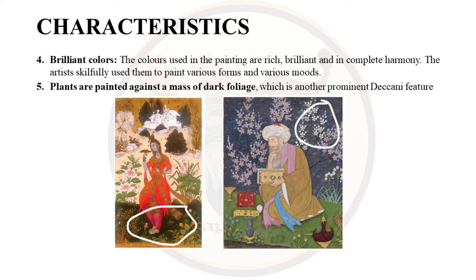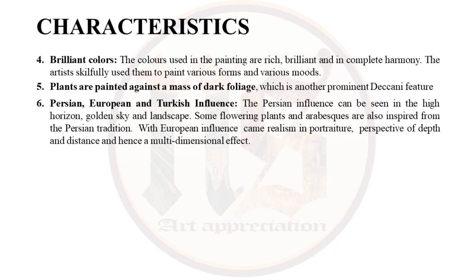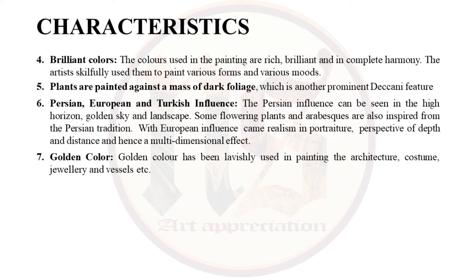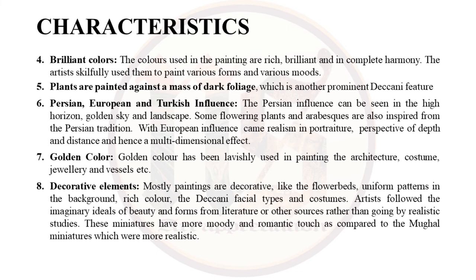Next is Persian, European and Turkish influence. Persian influence can be seen in the high horizon, golden sky and landscape, as well as flowering plants and arabesques inspired from Persian tradition. European influence can be seen in the realism of portraiture, perspective of depth and distance, and a multi-dimensional effect. Golden color has been lavishly used in painting architecture, costumes, jewelry and vessels. Paintings are decorative with flower beds, uniform patterns in the background, rich colors and Deccani facial types and costumes. Artists followed imaginary ideals of beauty from literature rather than realistic studies, giving miniatures a more moody and romantic touch compared to the far more realistic Mughal miniatures.